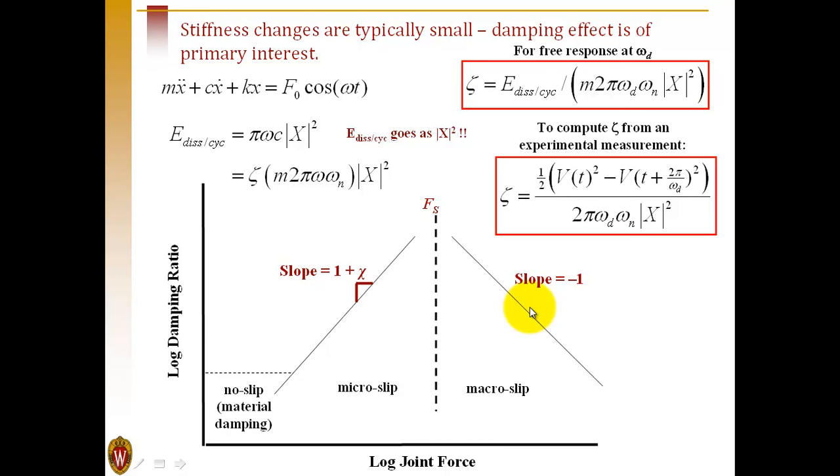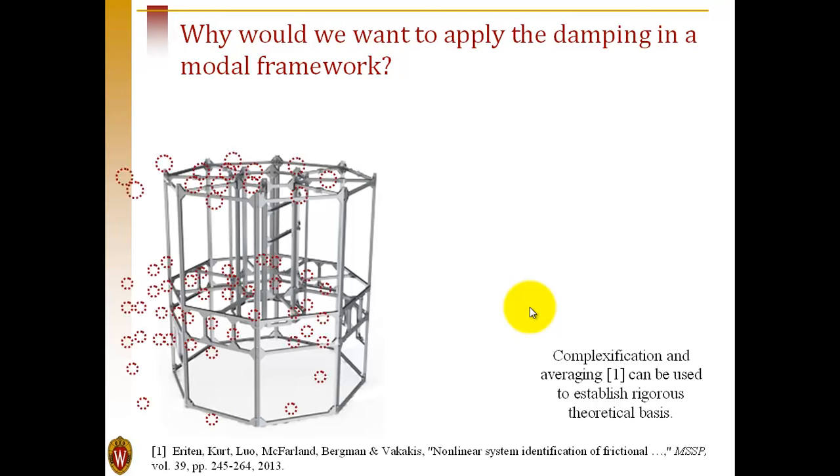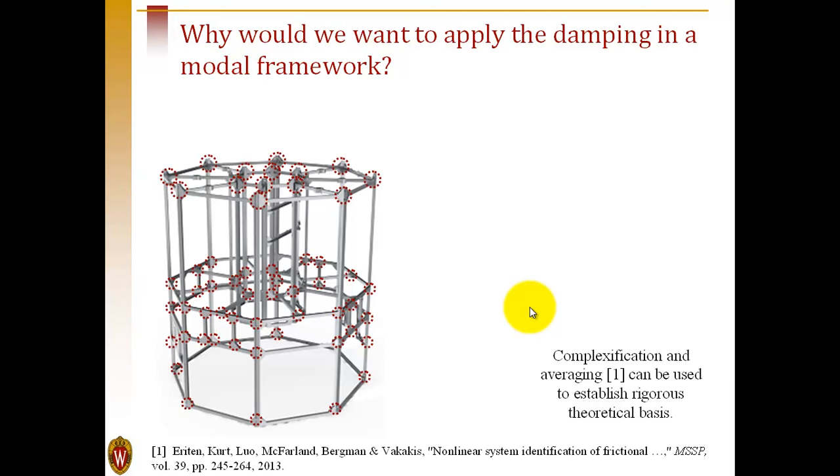This model is excellent, and we can use this to model discrete joints in a structure. However, if we have many joints, each one will require a separate joint model. We'll need many parameters to characterize them, and it becomes cumbersome computationally as well, having to track all of these different joints.